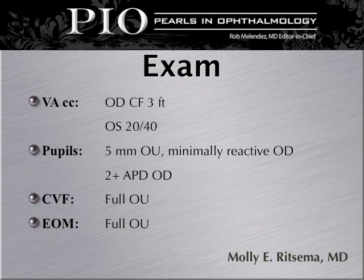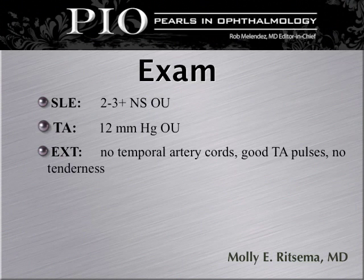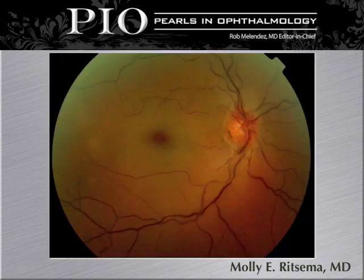On examination, his visual acuity with correction was count fingers at three feet, 20/40 visual acuity in the left eye. Pupils five millimeters in each eye, minimally reactive in the right but two plus afferent pupillary defect. Visual field and motility examinations were both unremarkable. His slit lamp examination was remarkable for a two to three plus nuclear sclerotic cataract in both eyes. His intraocular pressure was normal at 12 millimeters of mercury in each eye. External examination revealed no temporal artery cords, good TA pulses, and there is no scalp tenderness to palpation. His dilated funduscopic exam revealed diffuse whitening in the posterior segment of the retina with an obvious cherry red spot in the center.